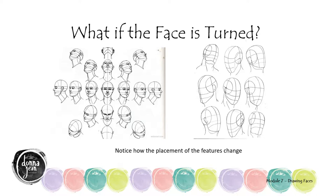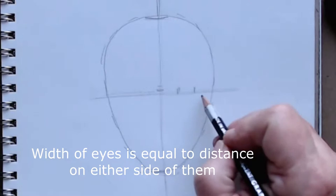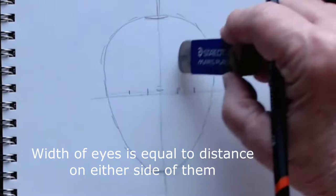What happens if the face is turned in a different direction? Well, those center lines pretty much hold true but where they are placed on the face changes. We're going to stick with just a simple straight-on face view, but I'd definitely encourage you after you get comfortable with that to try drawing faces in different directions. Here's how I approach drawing the eyes: I'm going to make four marks on that horizontal line, equally distant apart, so the distance between the two eyes is the same as the width of each eye.